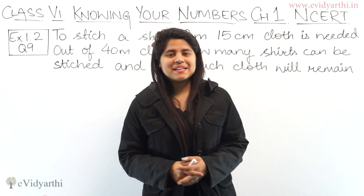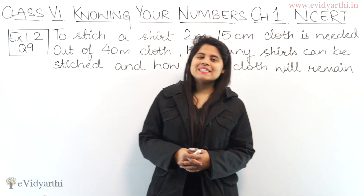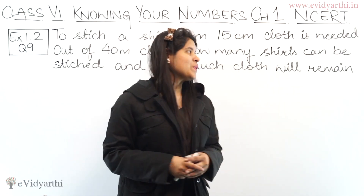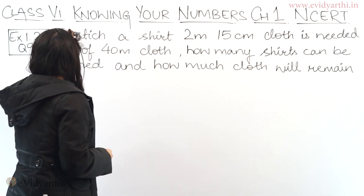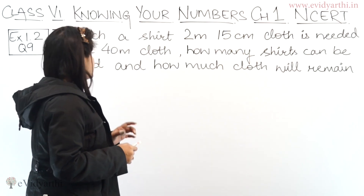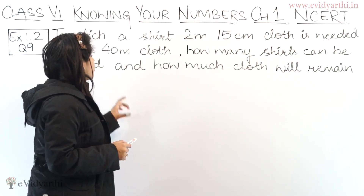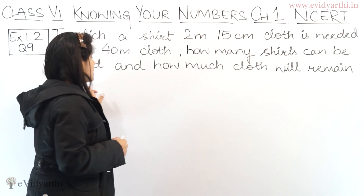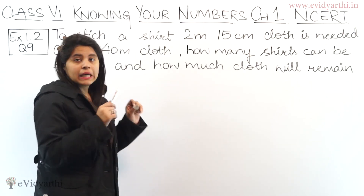Hello everyone, this is Malsi from Inithanti Tots and now let's start question number 9 of exercise 1.2. In this question we have to stitch a shirt. 2 meter 15 centimeter cloth is needed. Out of 40 meter cloth, how many shirts can be stitched and how much cloth will remain?